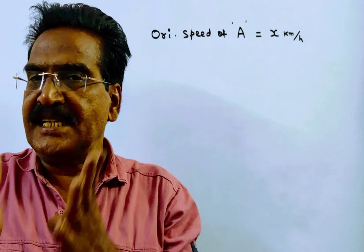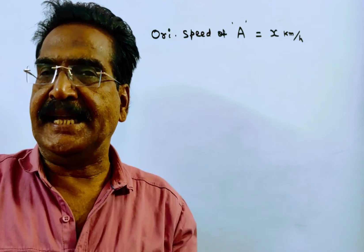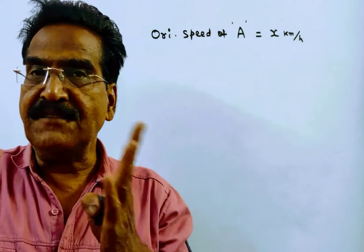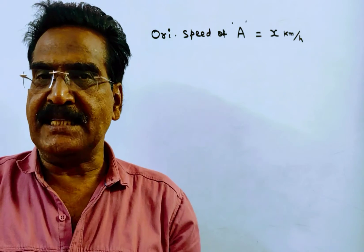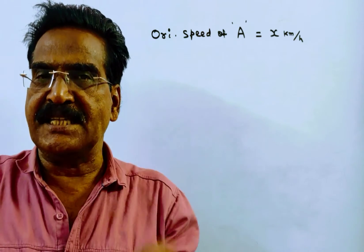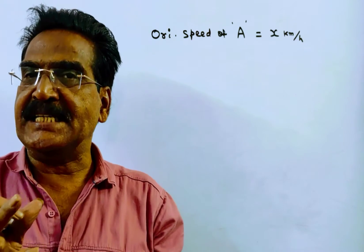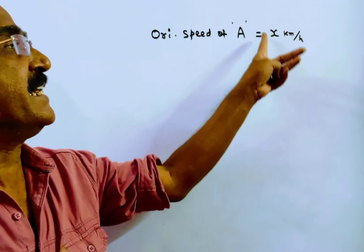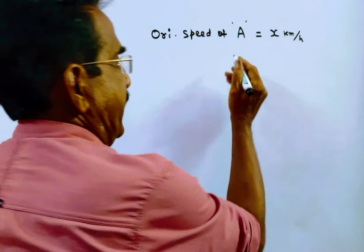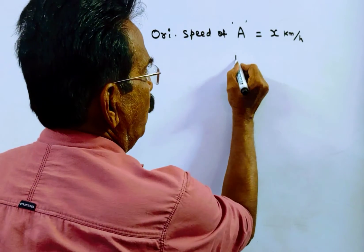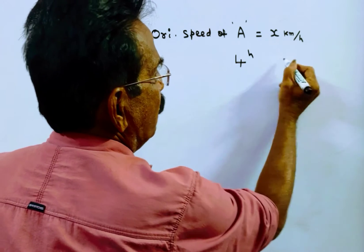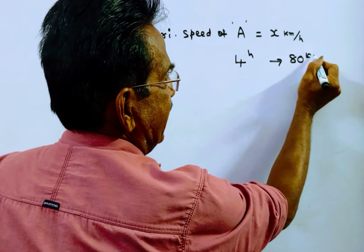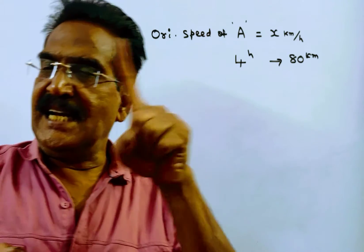If the distance is 40 kilometers, A takes 2 hours more than B. So if the distance is 80 kilometers, A takes 4 hours more than B at his normal speed.